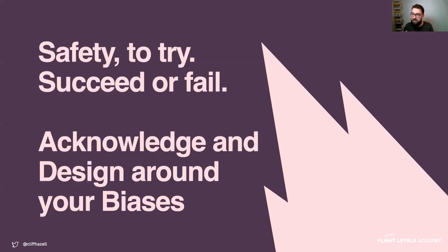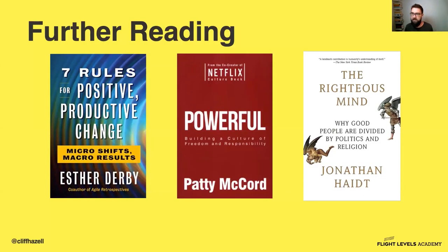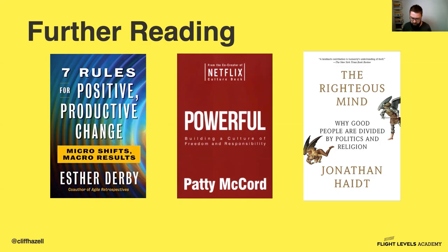To recap the sapiens part: to improve our ability to be agile at a full business level, we need to first address safety to fail — whether we succeed or try, we need to be safe to try. Secondly, acknowledge and design intentionally around our biases. Three books I recommend: Esther Derby's 'Seven Rules for Positive Productive Change,' 'Powerful' — the story of the creation of Netflix's culture — and Jonathan Haidt's 'The Righteous Mind,' which is really helpful for understanding how humans work and how we think.